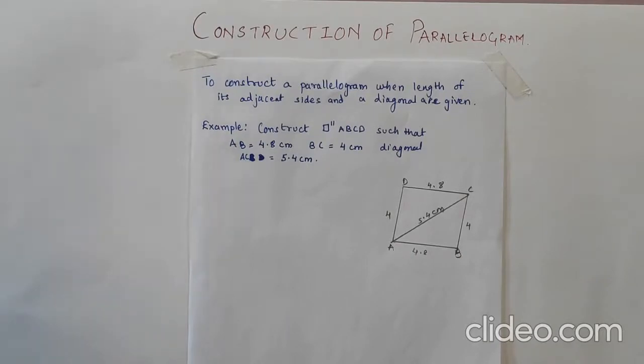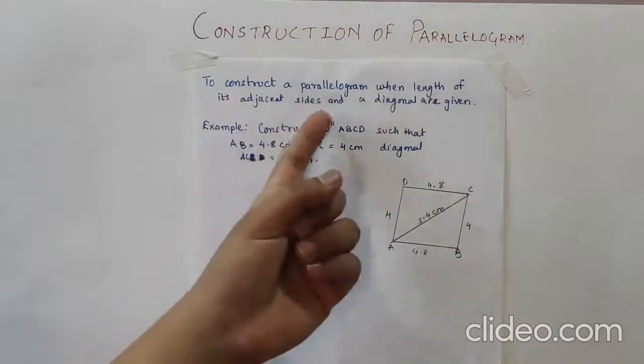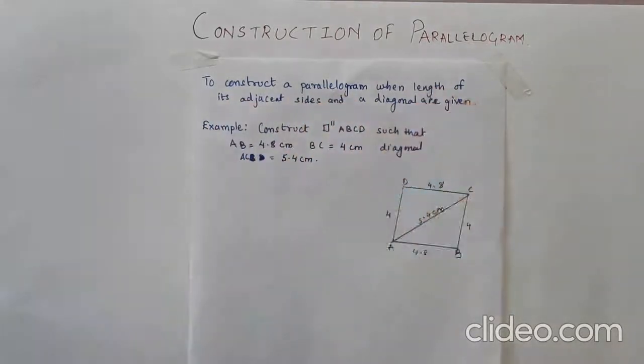Now to construct any type of quadrilateral, we require at least 5 elements. The first condition is to construct a parallelogram when the length of its adjacent sides and a diagonal are given.